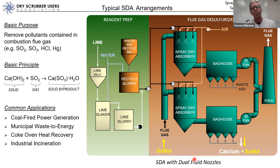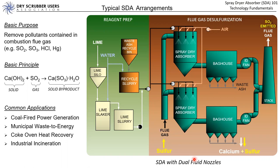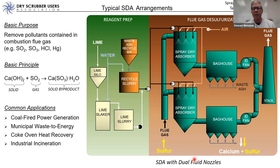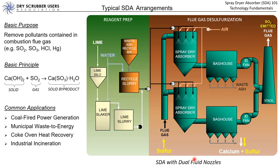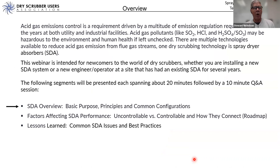Another question on approach to saturation — Stewart confirmed that will be covered in the next section. We'll hold those approach to saturation questions until then. Alright, let's move on. We're going to talk now about the factors affecting SDA performance, including approach to saturation, how flue gas flows split or don't split evenly, and for each factor we'll discuss lessons learned, common issues, and best practices.